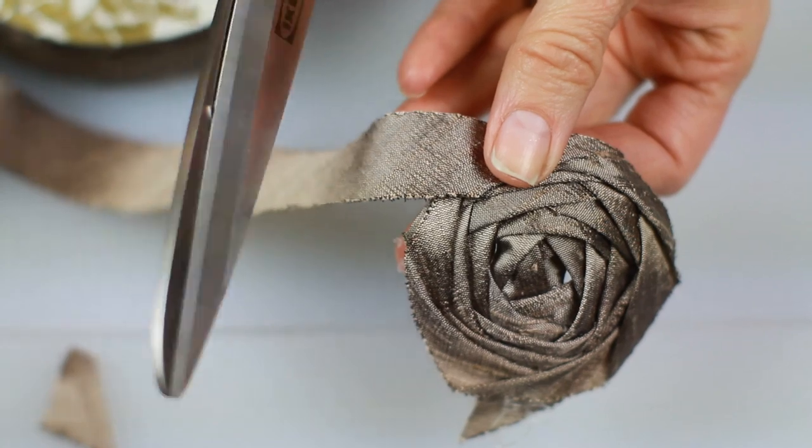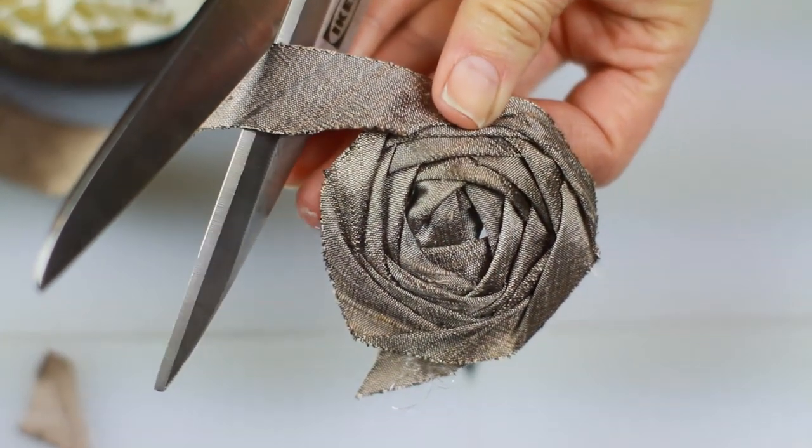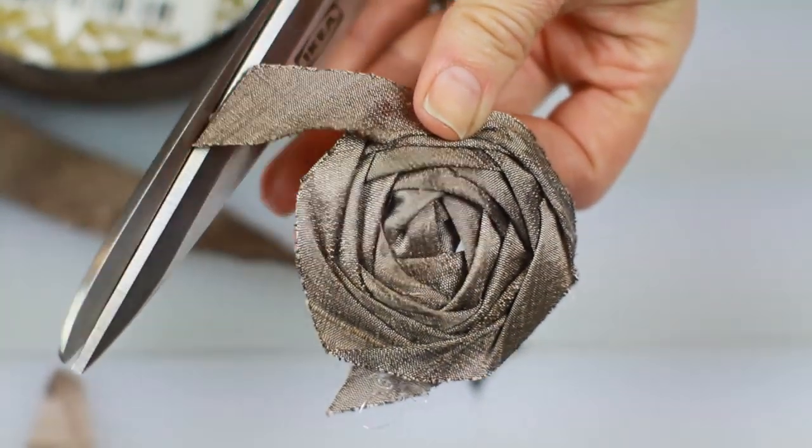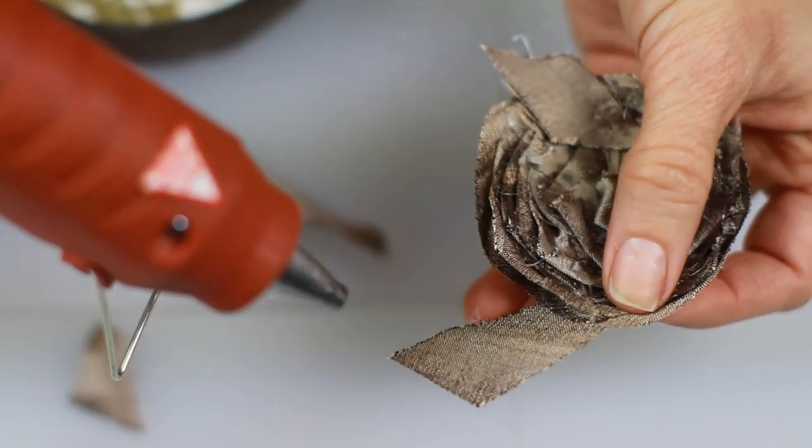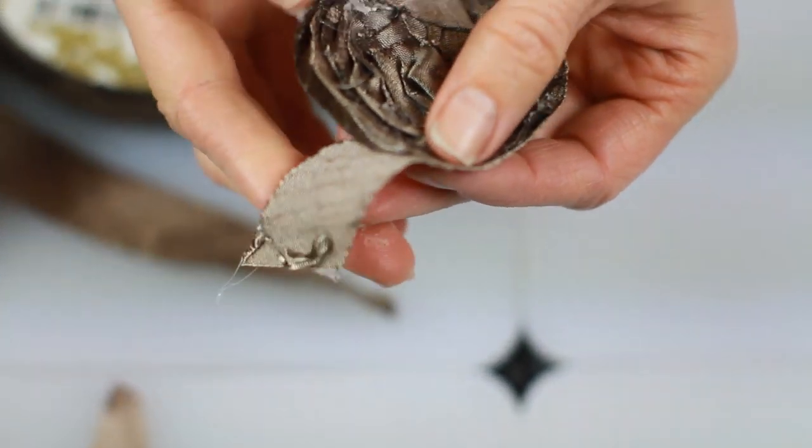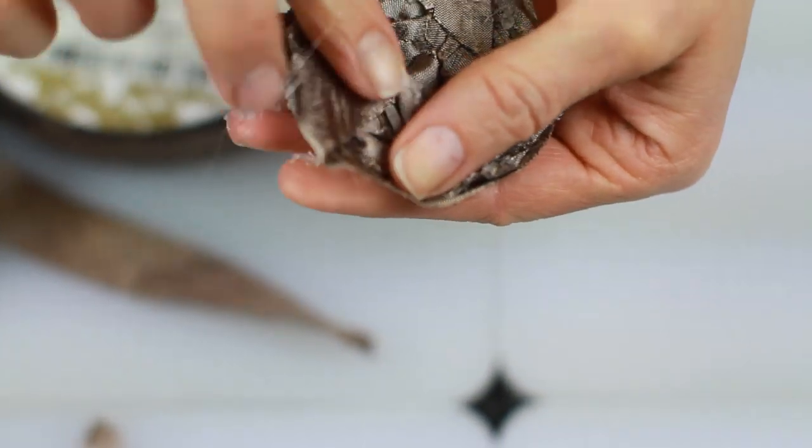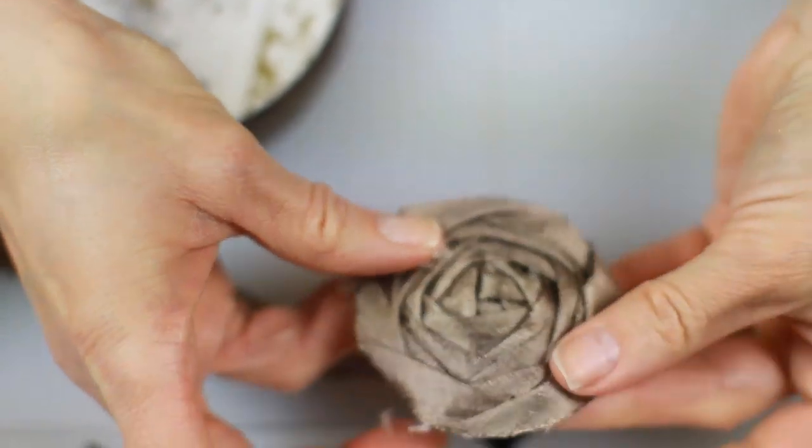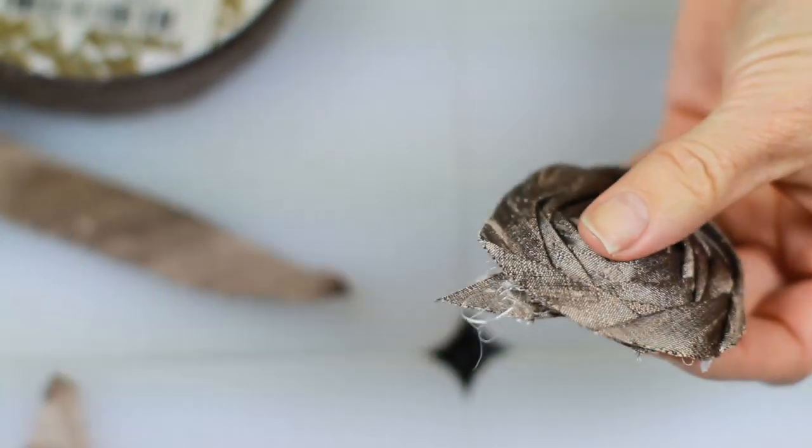When you're done, you're going to cut it at an angle there. You're going to take some glue and just dab it on the end and tuck that under. And then you're going to do the same for the other end of the rose, the other end of the ribbon that you started with. Just tuck that under nicely. And there's your rose.